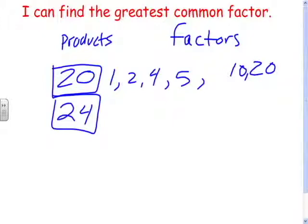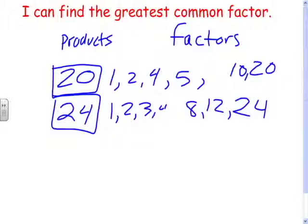What are the factors of 24? 1 and 24. 2 times anything? 2 and 12. 3 times anything? 3 and 8. 4 times anything? 4 and 6.